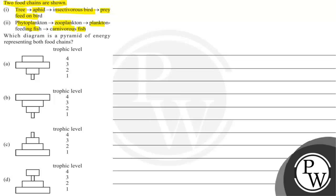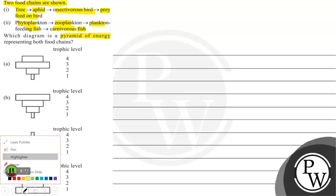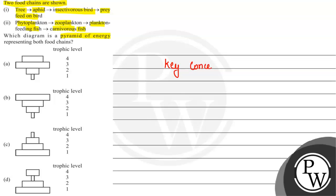Which diagram is the pyramid of energy representing both food chains? Question में हमें four options दिए गए हैं, जिनमें ecological pyramids को depict किया गया है. हमसे पूछा गया है कि इन दोनों food chains के लिए satisfy करने वाला कौन सा है pyramid of energy? तो हमारे पास इस question में जो key concept use होगा, ये key concept होगा हमारा pyramid of energy.